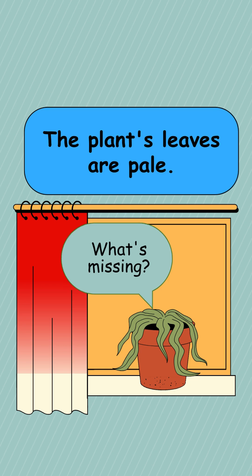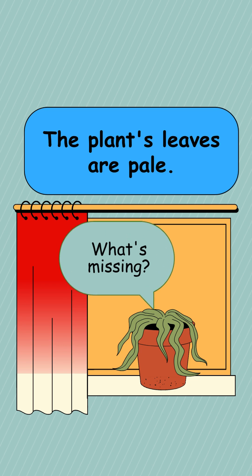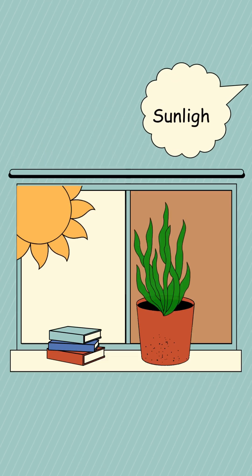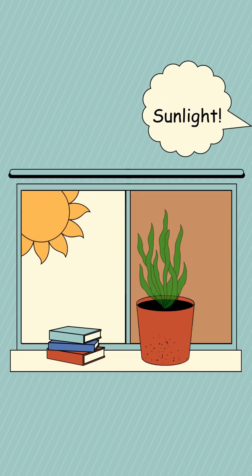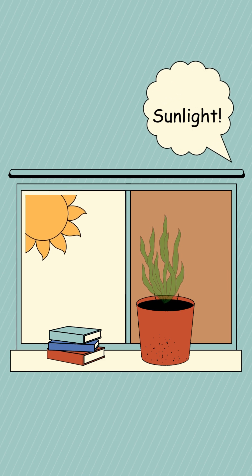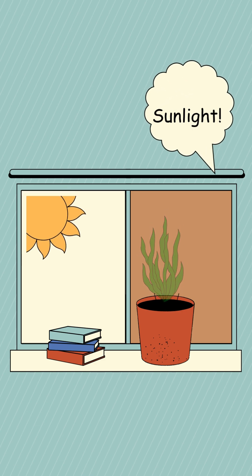The plant's leaves are pale. What's missing? It's sunlight. Without sunlight, leaves can't make energy to keep the plant alive.